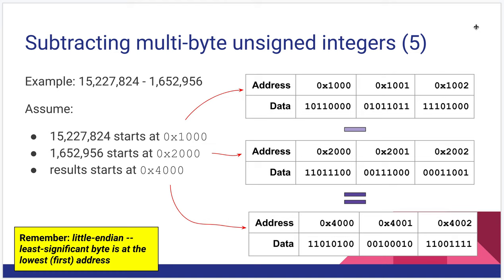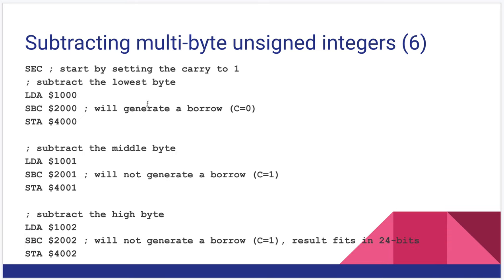Now let's look at this in code. Same data layout we had for the addition. I'm using the same numbers. Our first operand starts with its low byte at $1000, second operand starts with its low byte at $2000, and we're going to store the low byte of the results starting at $4000. Again, little endian, so our low bytes are always at the lowest addresses. And here's what the code will look like. We'll start by setting our carry to one with the SEC instruction. Subtract the lowest byte. Load in the low byte from the accumulator. Subtract what's in address $2000, and as we saw before, this one will actually generate a borrow, a carry out of zero. And then we store all that to $4000.